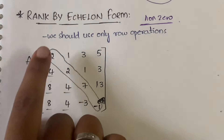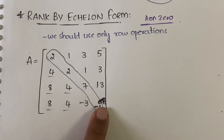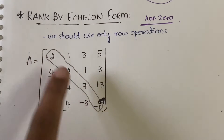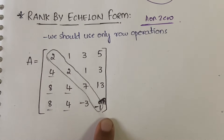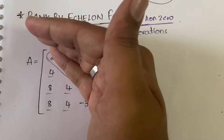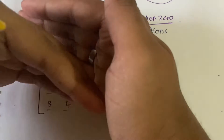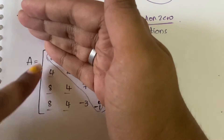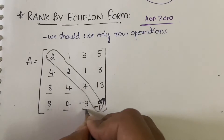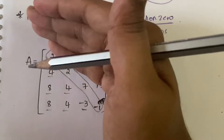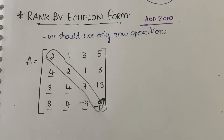Basically, what you have to do first is, as soon as you see the matrix, you need to identify the diagonal. For this matrix, the diagonal elements are 2, 2, 7, and minus 1. Once you identify the diagonal, all the elements below the diagonal — all these underlined elements — should become 0s.